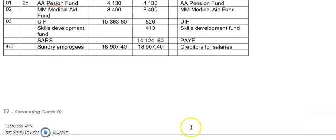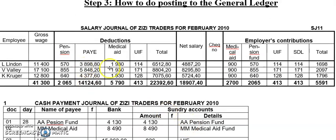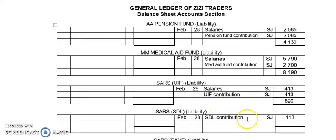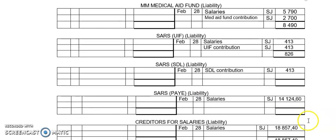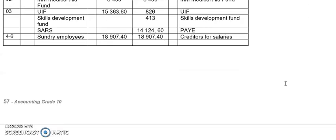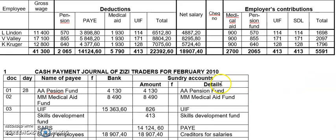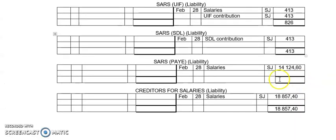Then they ask me to do SDL — Skills Development Levy or Skills Development Fund. There is nothing in deductions, but it is in contributions. So I write 'skills development contribution' because we're taking it from contributions — 413. Then SARS PAYE. Go to deductions — PAYE 14,124.60. There's nothing in employer contributions. Write 'salaries SJ 14,124.60.'